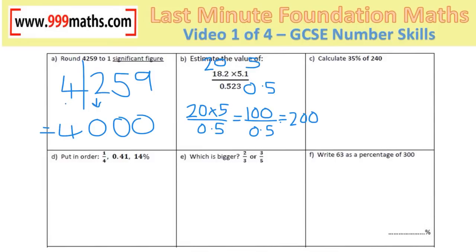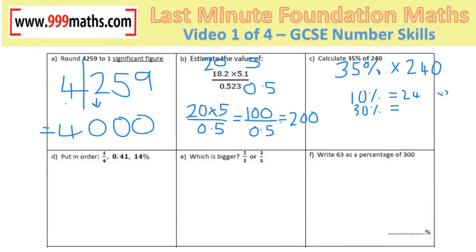35% of 240. With a calculator we just type in 35% times 240. Without a calculator, we start by doing 10% which is 24. 30% would be that times 3, and 5% is half of the 10%. Adding together the 30% and the 5% gives the answer of 84.